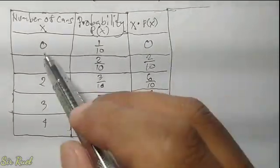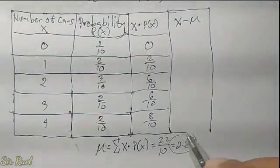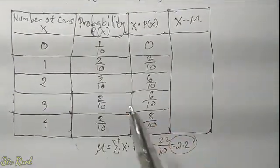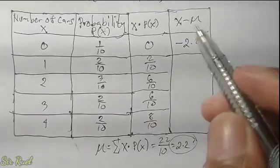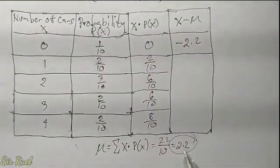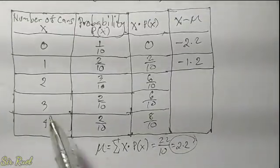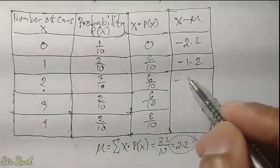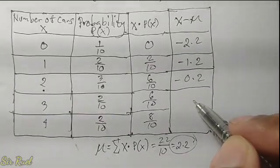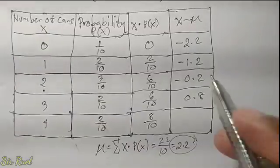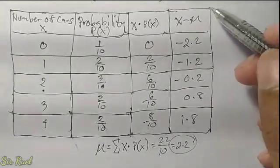Next, we need to find the difference of x and the mean, labeled as x minus mean. So: 0 minus 2.2 is negative 2.2; 1 minus 2.2 is negative 1.2; 2 minus 2.2 is negative 0.2; 3 minus 2.2 is positive 0.8; and 4 minus 2.2 is positive 1.8.